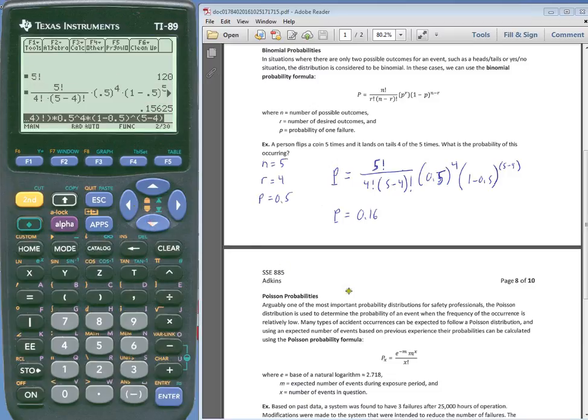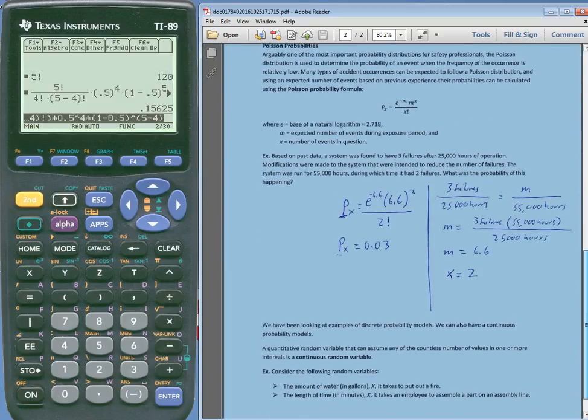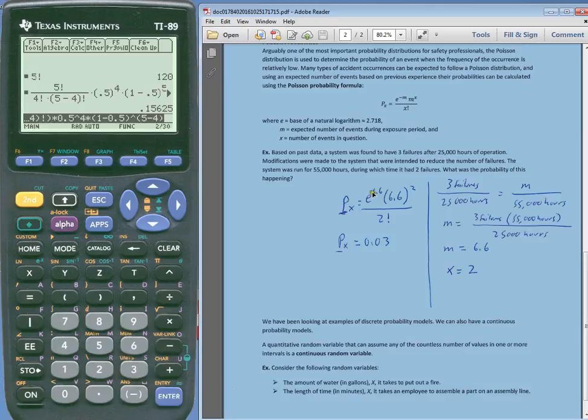So then, for the Poisson probability, we need to be able to use this exponential term. And so on this type of calculator, that exponential is e to the x, right? So it's shown right here.